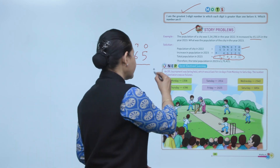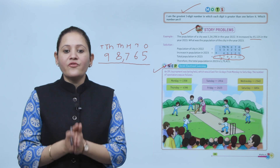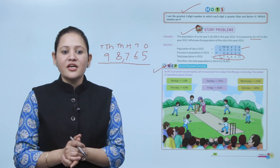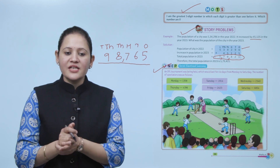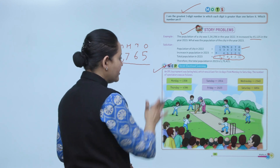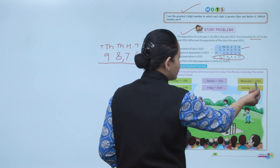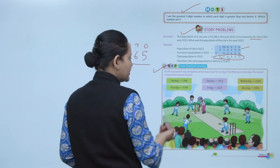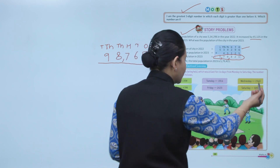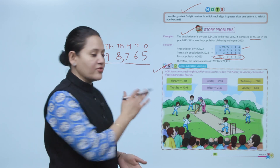Next is social-emotional learning. An IPL tournament was held for six days, Monday to Saturday. The number of spectators were: Monday 1,358; Tuesday 1,914; Wednesday 2,340; Thursday 4,396; Friday 2,423; and Saturday 6,854.